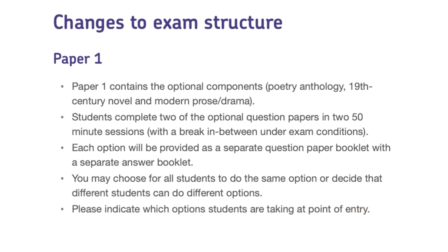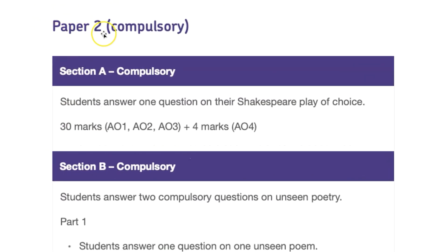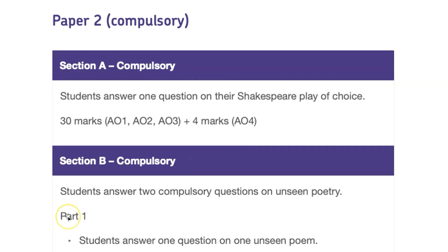Or you can just do the ones that your school is doing with everybody. Now, we come to Paper 2, which is compulsory — so you have to answer all the questions. The first section, Section A, will be on the Shakespeare play that you've studied.